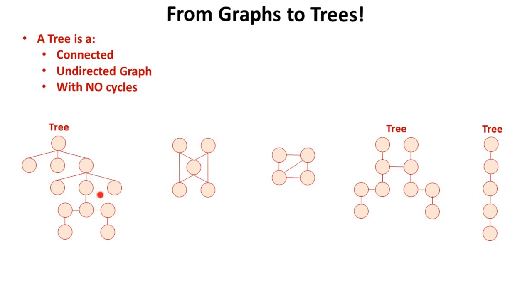They're connected, undirected graphs. That means there's no single direction that any one of these can flow. We can go forwards and backwards. They're bi-directional. And there are no cycles.